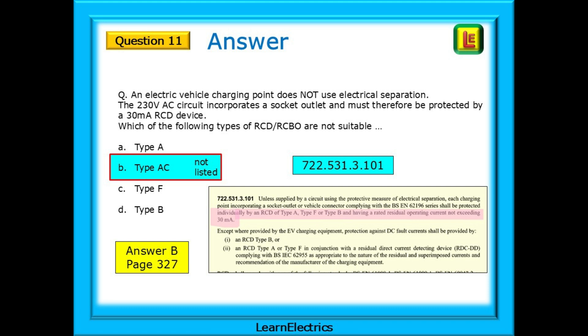Using the index, page 601, look for residual current devices, RCDs. Several lines down, we find an entry for electric vehicle charging points of Regulation 722.531.3.101 that takes us directly to the answer that we need.